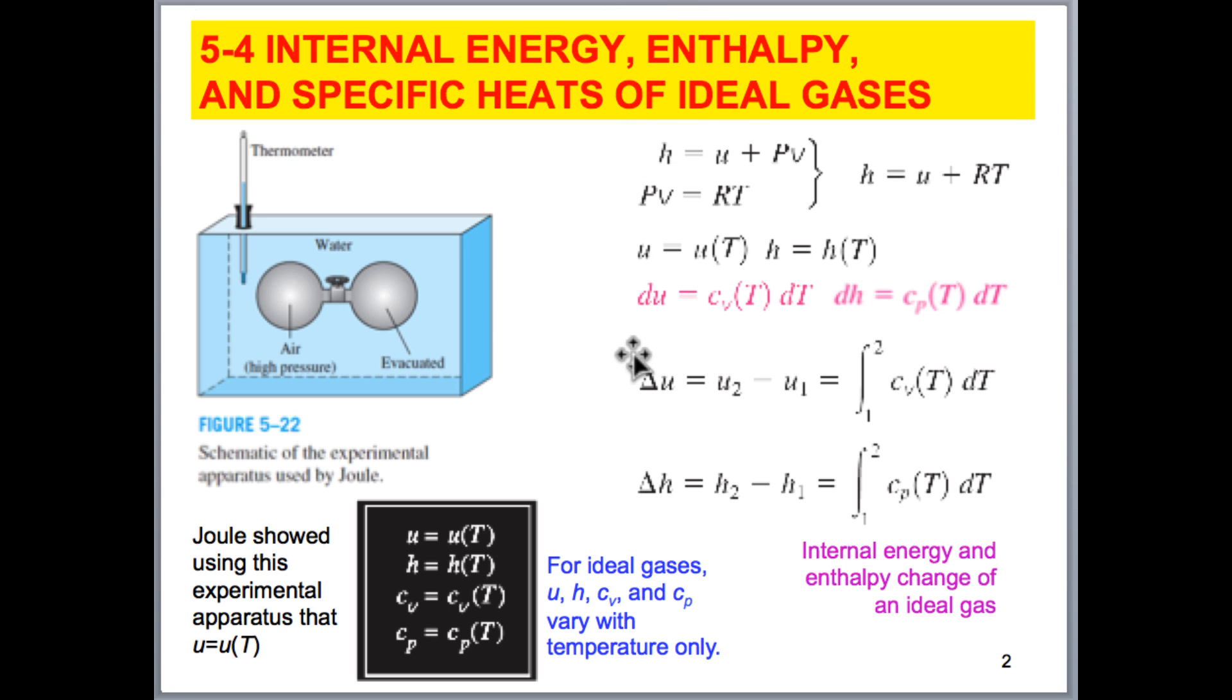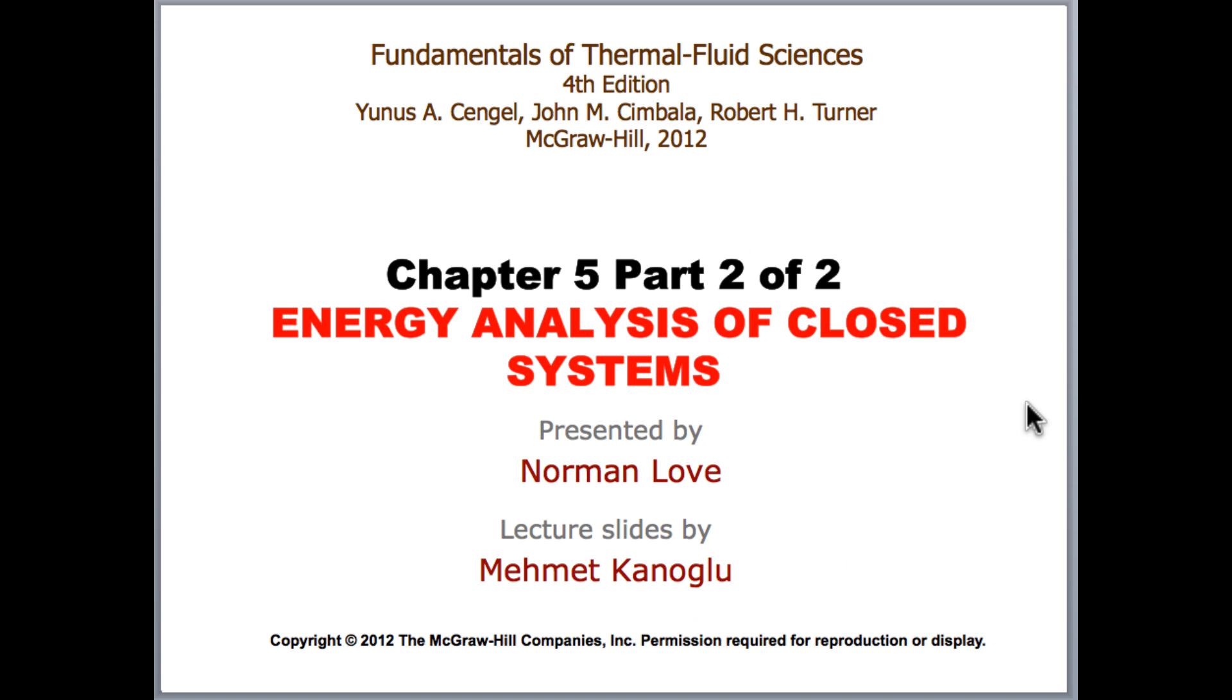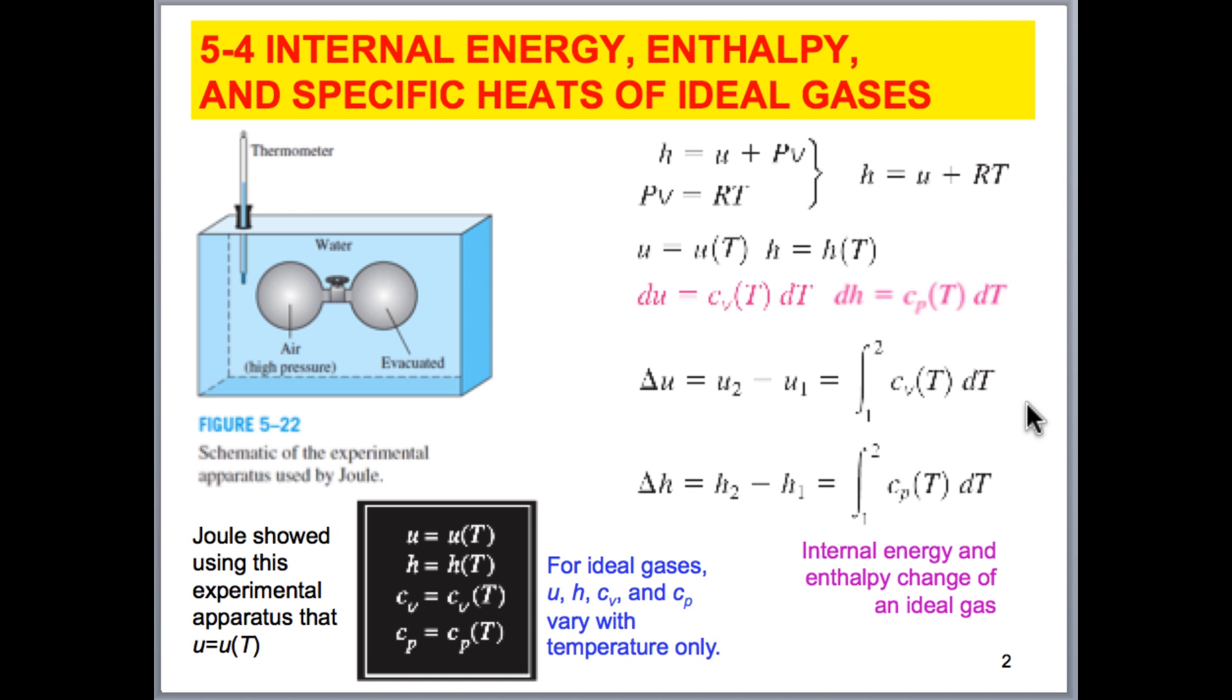Knowing that we can express now these terms here. We can say that, knowing that since the internal energy is a function of temperature, we can integrate this. If you guys remember, the definition of specific heat was the partial derivative of internal energy with respect to temperature at a constant volume. But since through Joule's experiment we determined that this property is only a function of temperature, internal energy, we changed it now to an ordinary derivative. So now we're able to integrate this differential equation, like so.